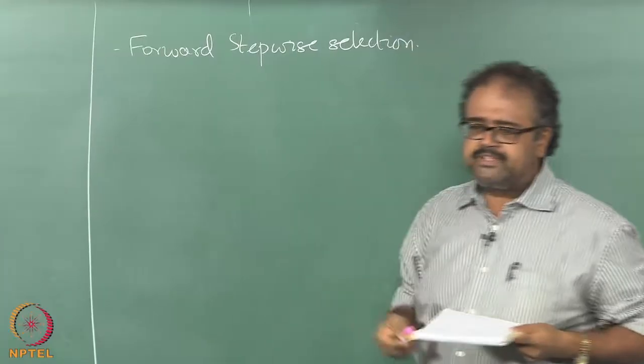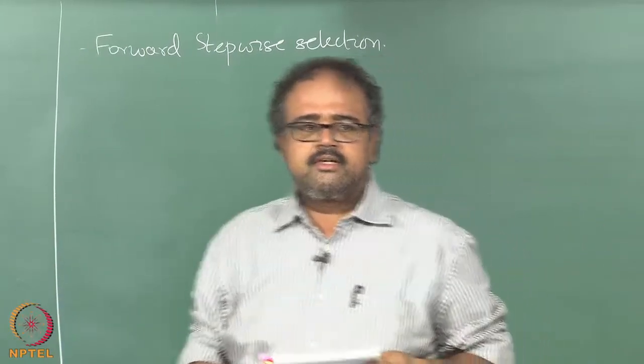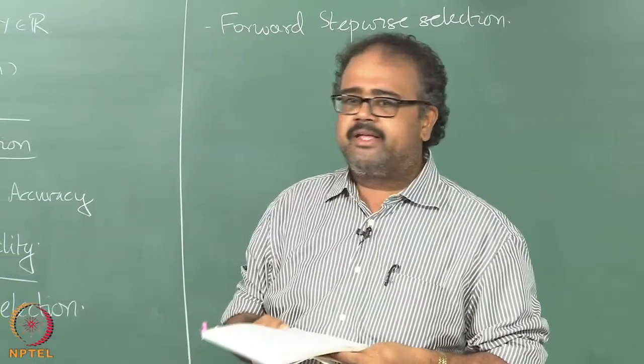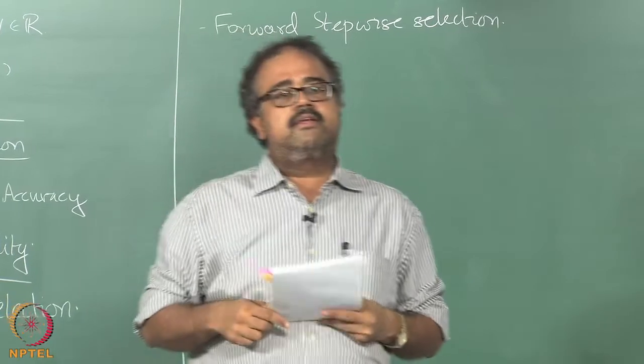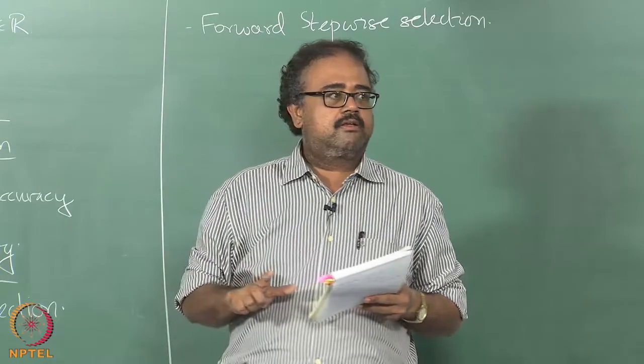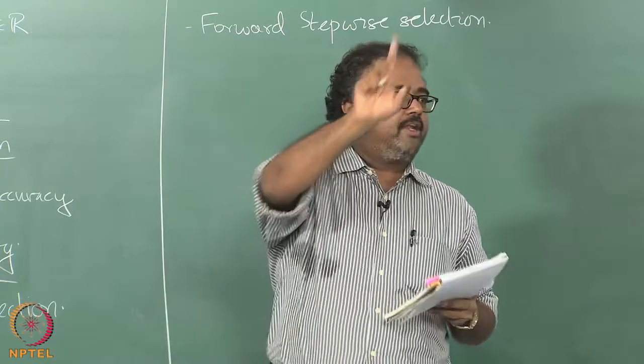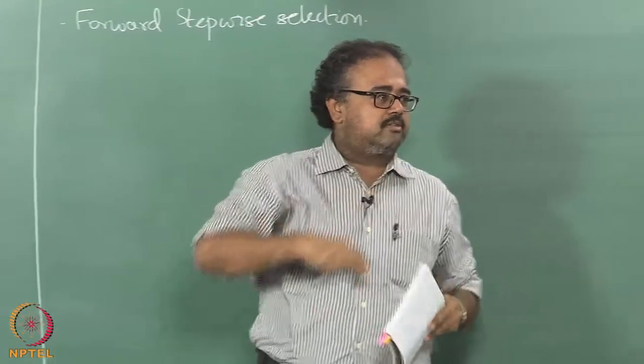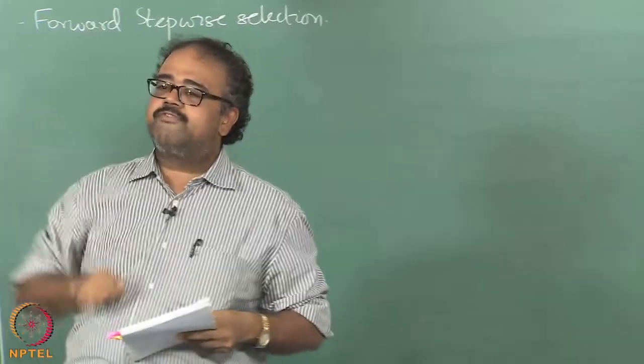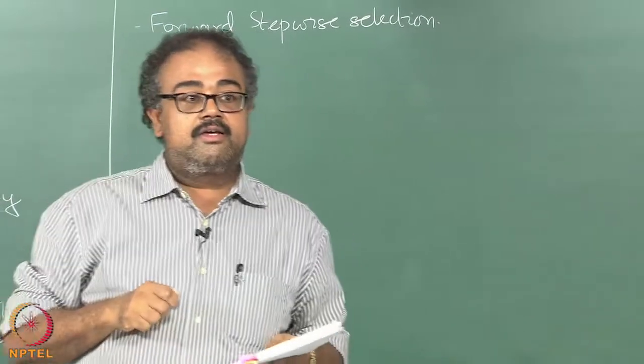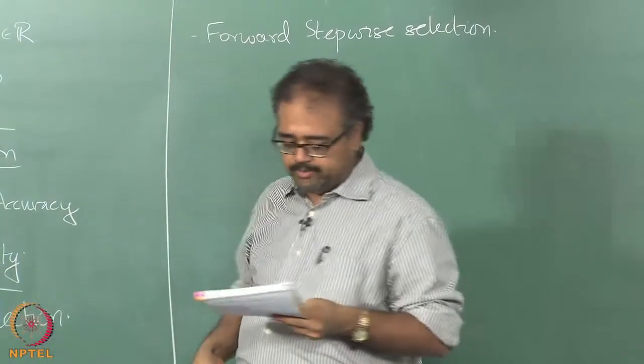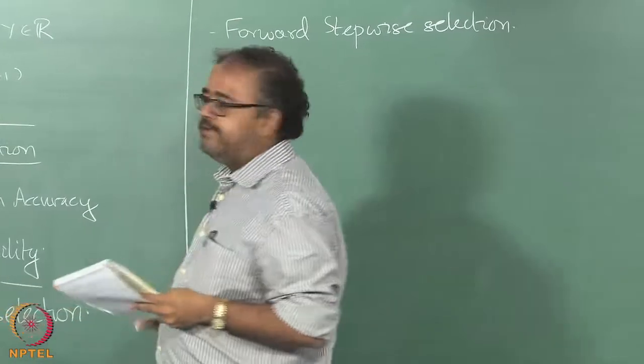Next thing is forward stepwise selection. Any guesses what that is? Exactly, it is being greedy. It is just trying to do best subset selection by being greedy. You start off with, what is the feature you would for sure want to have? All ones, okay, you need the intercept. Otherwise your line has to pass through the origin. You need the intercept, you start with the intercept. What should be the coefficient for the intercept? We already looked at it before, the mean of the y's. That will be the coefficient. You already have fitted that.